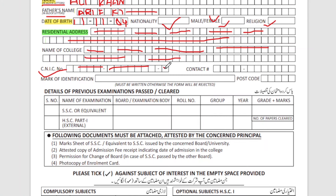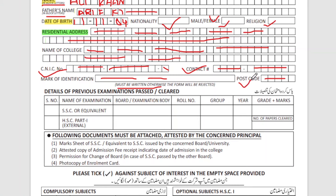Similarly, fill in the contact number that you have mentioned — make sure it is active so you can receive calls or messages. For the mark of identification, if you have a scar or any distinguishing feature, you can mention it. Then there is the postcode — I have already made a video on how to find your postcode. This is very important.